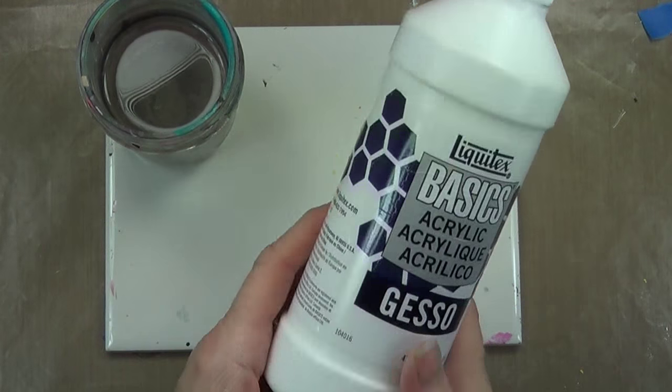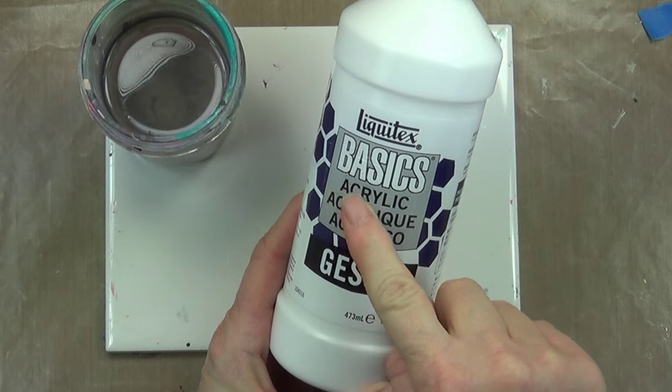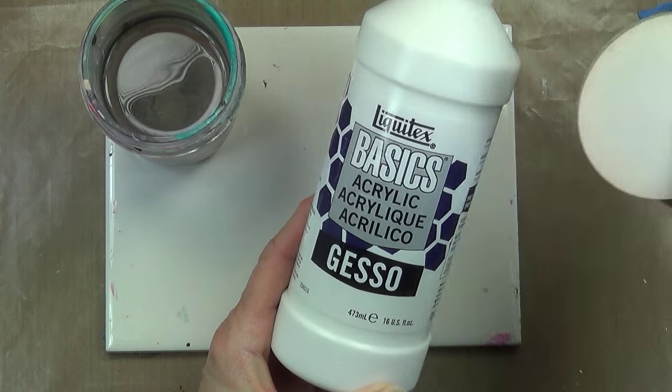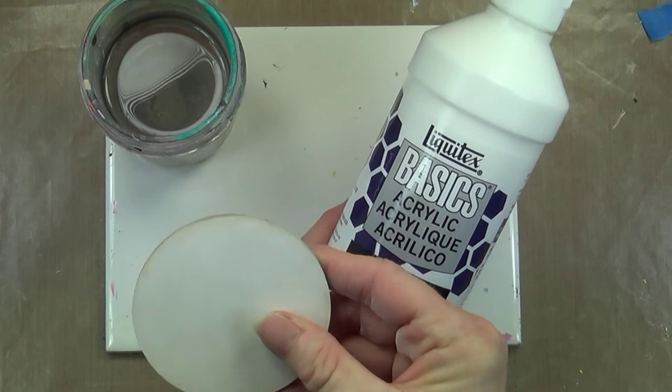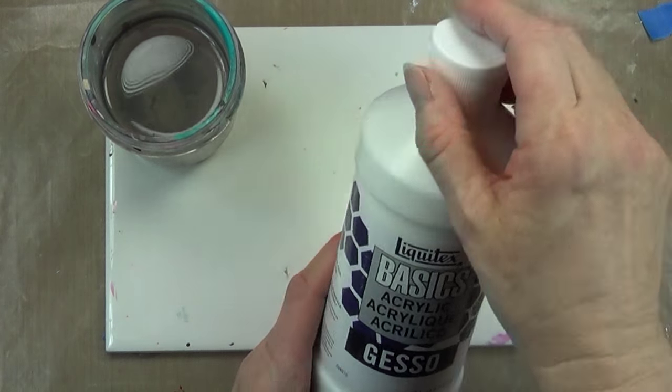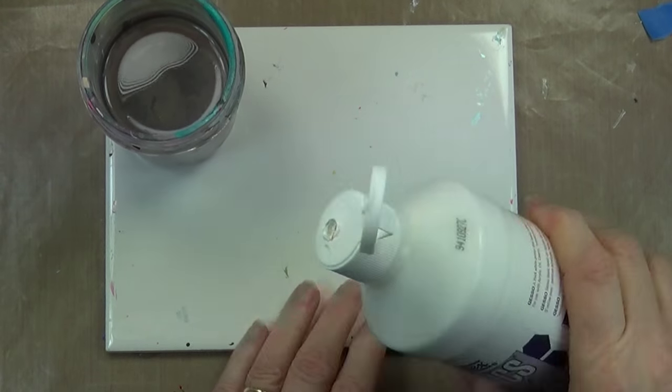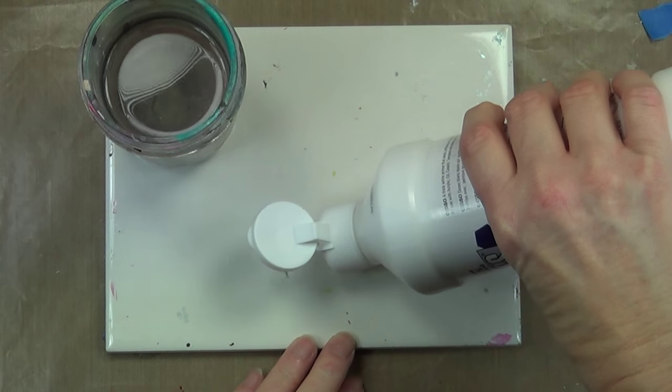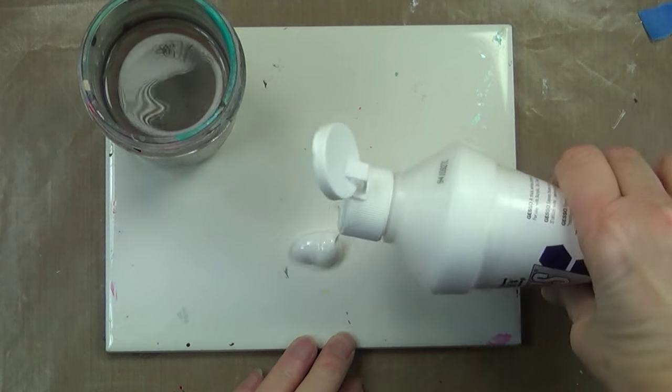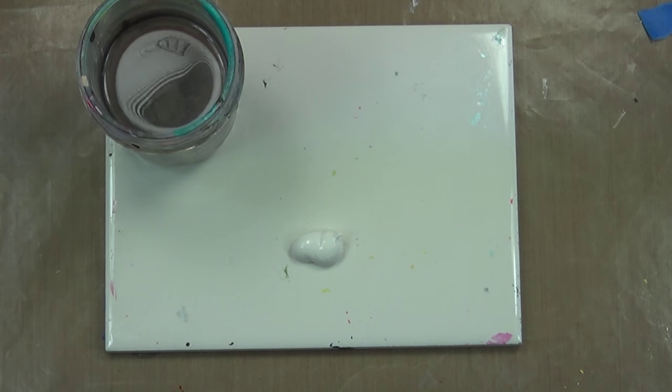Here's the liquid acrylic gesso that I use and it's Liquitex is the brand that I use. If you make sure to get the acrylic, it is white. I've purchased other gesso, just basic gesso, and it's clear and it doesn't cover those burnt imperfections like the acrylic gesso does.